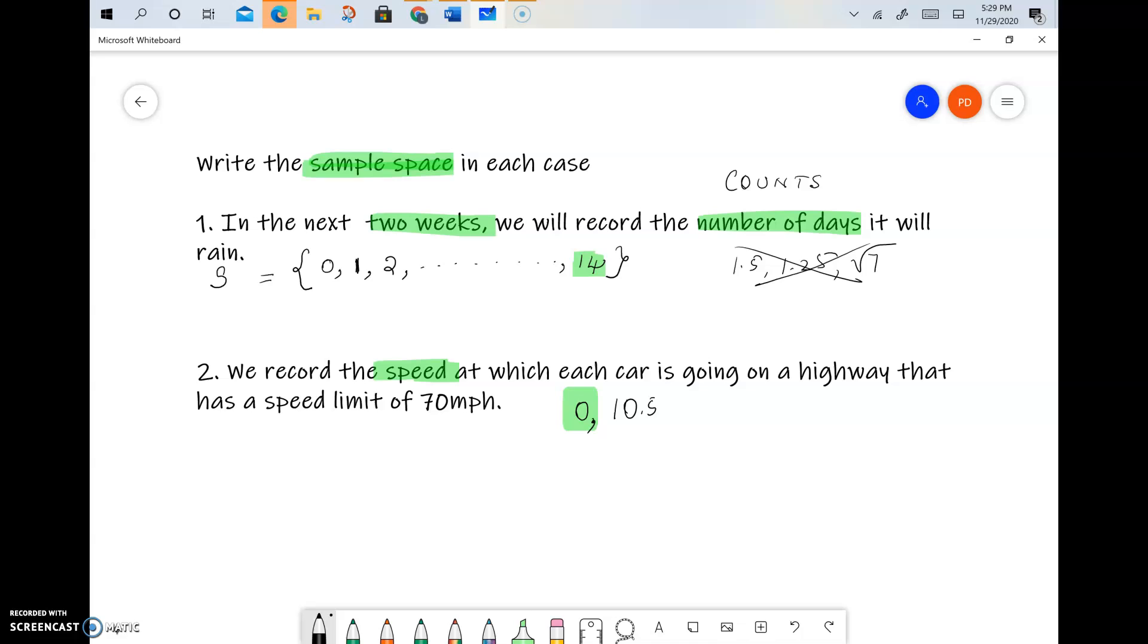So it could be zero if the car has stopped completely, so zero is a possibility. It could be going at 10.5 miles per hour, it could be going at 32.5 miles per hour, it could be going at 61.785 miles per hour, and so on. And the upper limit would be 70.